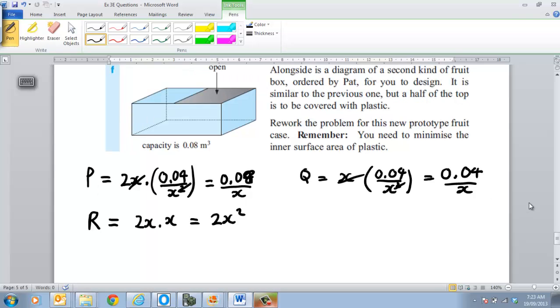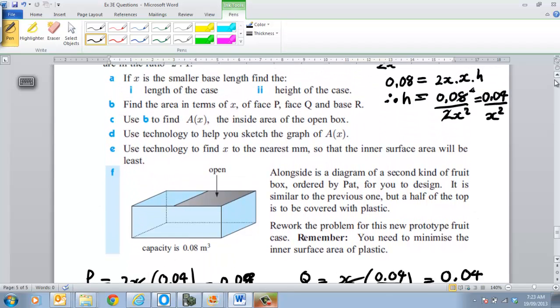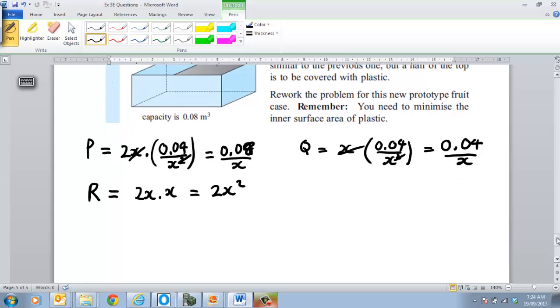Alright, so we've got those three faces, the three different types of faces that you've got there. Then Part C says, using Part B, find the area of the inside of the open box. Well, keep in mind what we've got here. So Part C, the area is going to be equal to 1 of R plus 2 of P plus 2 of Q. Alright, because obviously it's an open box, so it's only got a base, it doesn't have a lid.